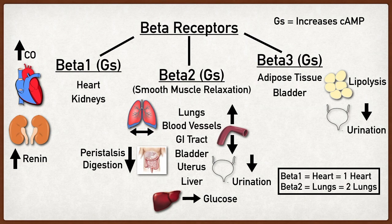Let's wrap up with a summary of the beta receptors. Beta 1 receptors are mainly located in the heart and kidneys. When activated in the heart they increase heart rate and stroke volume, ultimately increasing cardiac output and blood pressure. When activated in the kidneys they lead to renin release from the juxtaglomerular cells, activating the renin-angiotensin-aldosterone system to increase blood pressure. Beta 2 receptors are mainly located on smooth muscles — activation leads to smooth muscle relaxation — and in the liver to increase glucose levels. Beta 3 receptors are mainly in adipose tissue and possibly on the detrusor muscle of the bladder, leading to decreased urination.